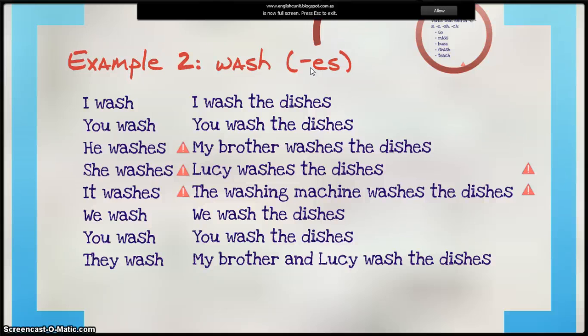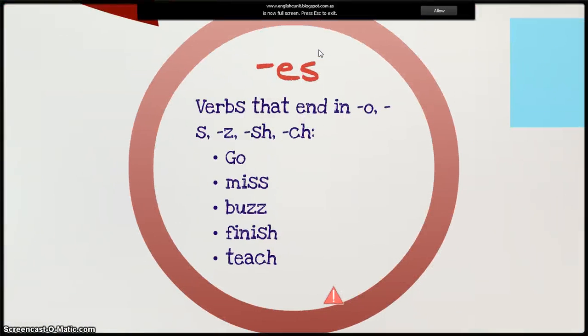Second case. Some verbs have final ES. They are verbs that end in O, for example go. Verbs that end in S, for example miss. Z like buzz. SH like finish. Or CH like teach.